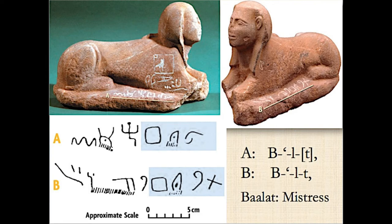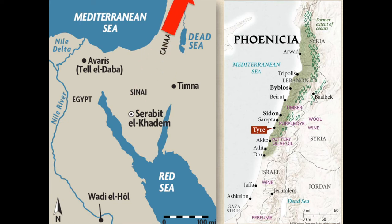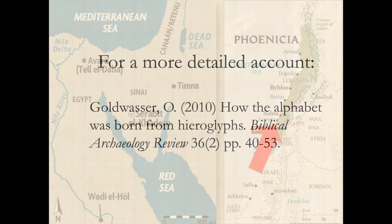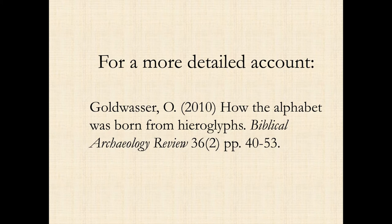Actually, it's not exactly an alphabet — it's more of what we would call an abjad, meaning the letters represent consonantal sounds, not vowels. But this was a major first step in writing things down in an alphabetic language. These Canaanites didn't stay in Serabit; they eventually went home, back to Phoenicia. If you're interested in this topic, I highly recommend the article by Dr. Goldwasser, 'How the Alphabet Was Born from Hieroglyphs,' in Biblical Archaeology Review 36.2, pages 40–53.